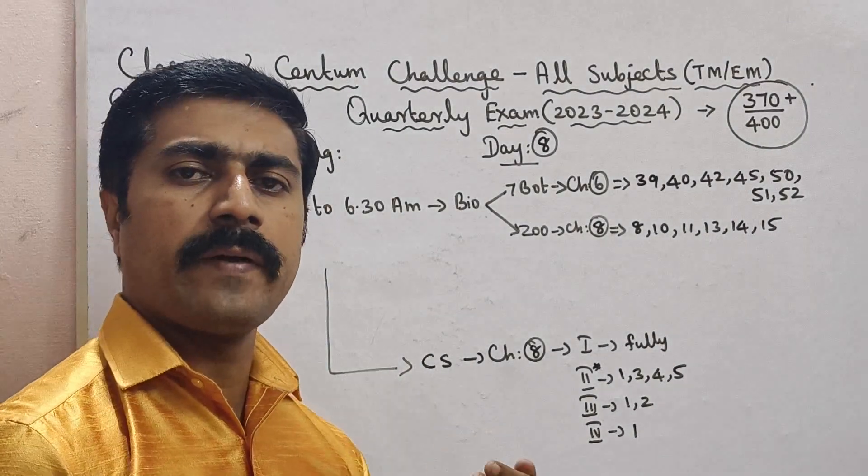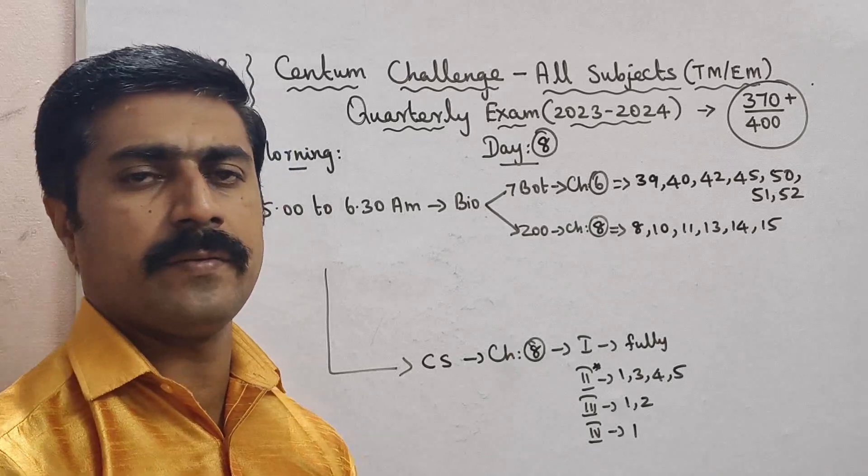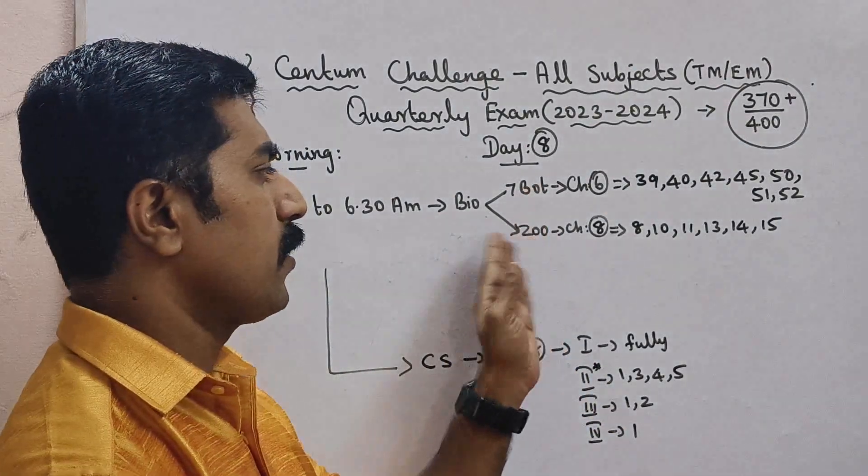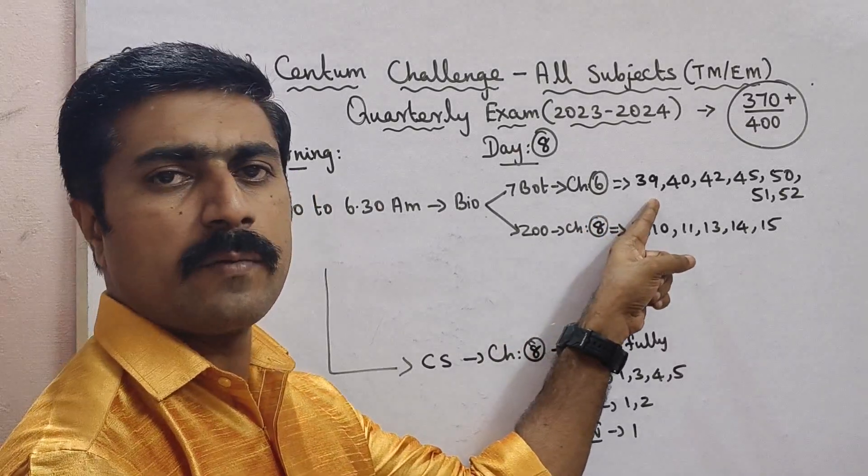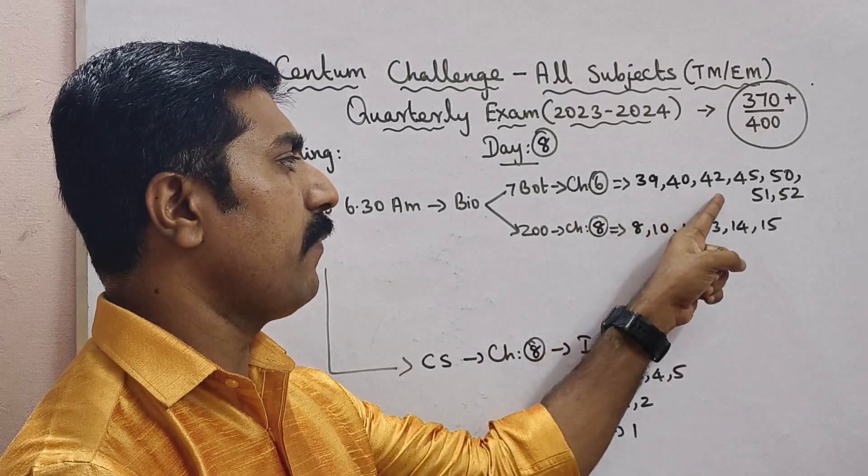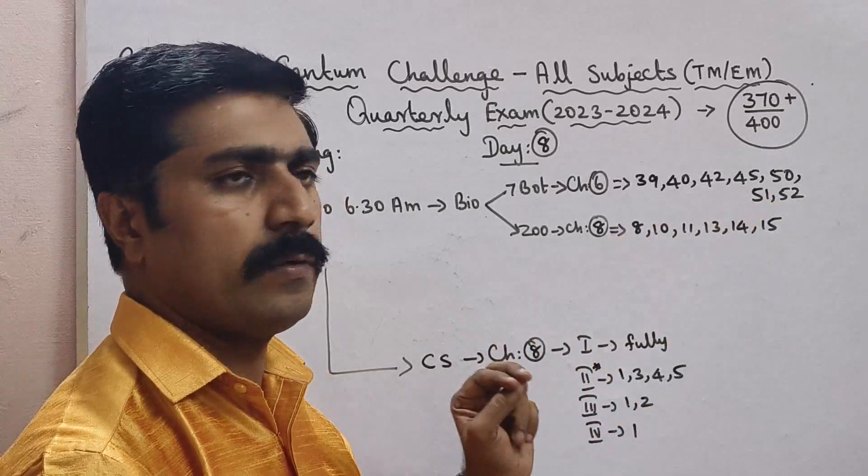One and a half hours biology. Botany chapter 6 book back question numbers 39, 40, 42, 45, 50, 51, 52.